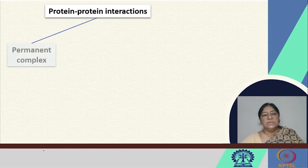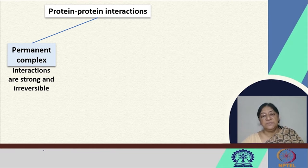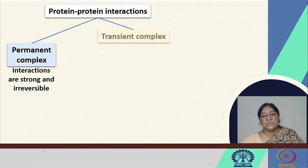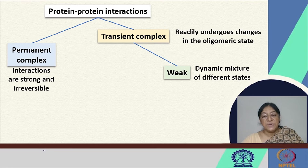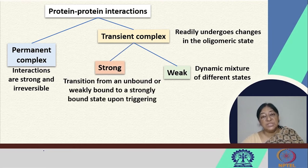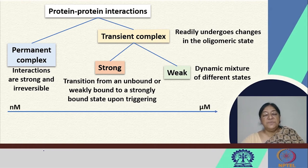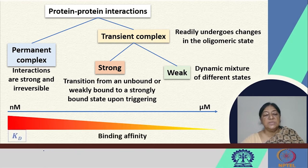For protein-protein interactions, we can have a permanent complex where the interactions are strong and irreversible, like in specific subunit proteins where we have the quaternary structure involved — a permanent complex of the monomeric units. We can also have a transient complex, either a weak type depending upon the specific conditions and reaction, or a strong type where we can have a transition from an unbound, weakly bound to a strongly bound state triggered by a cofactor or ATP hydrolysis. The binding affinity for permanent complexes is much smaller — the KD values are smaller — indicating a tighter complex.